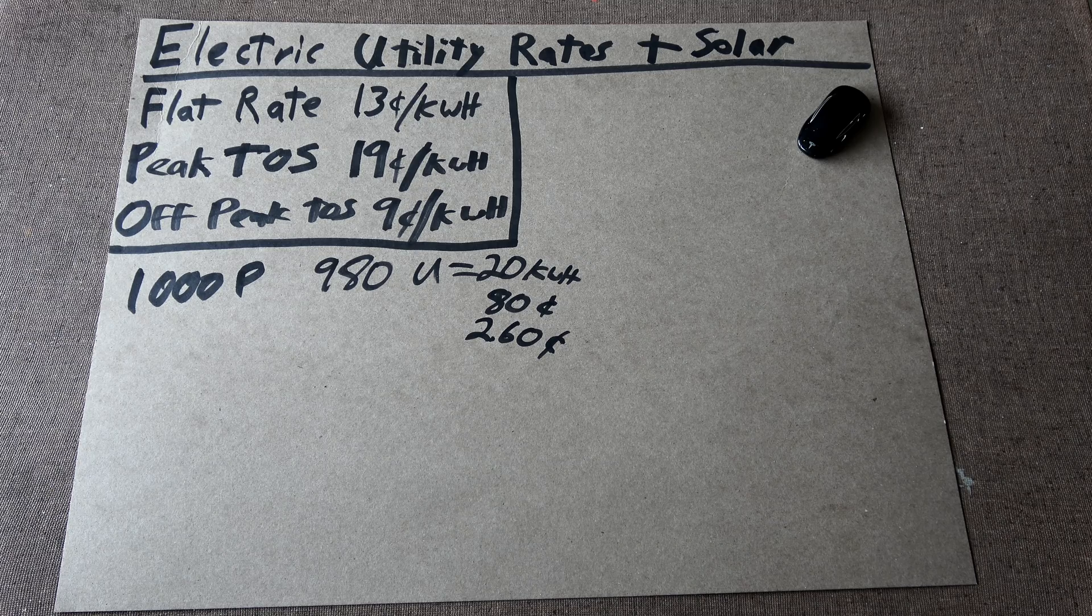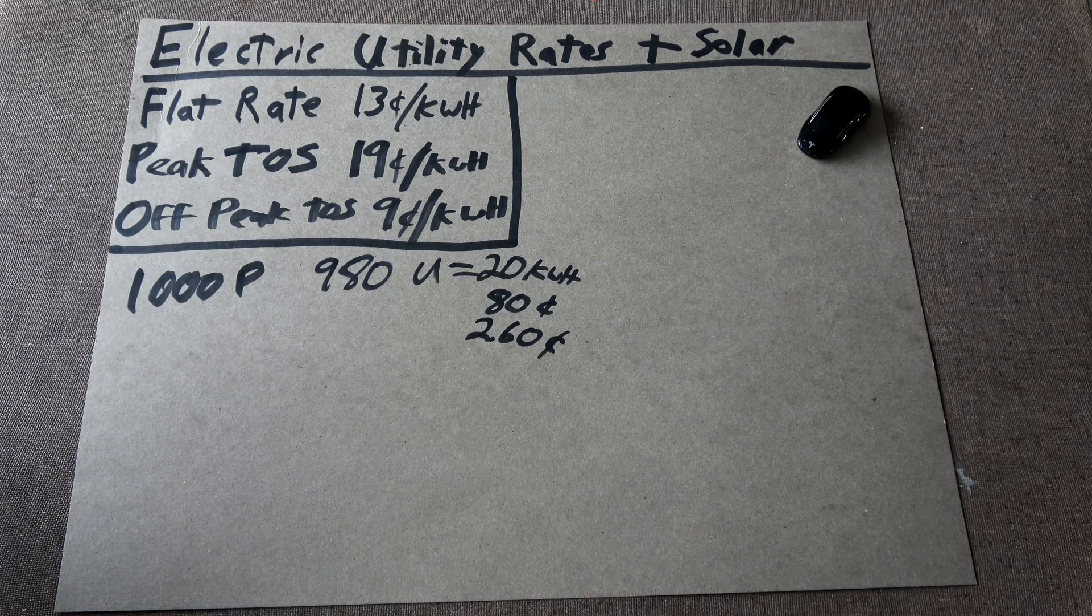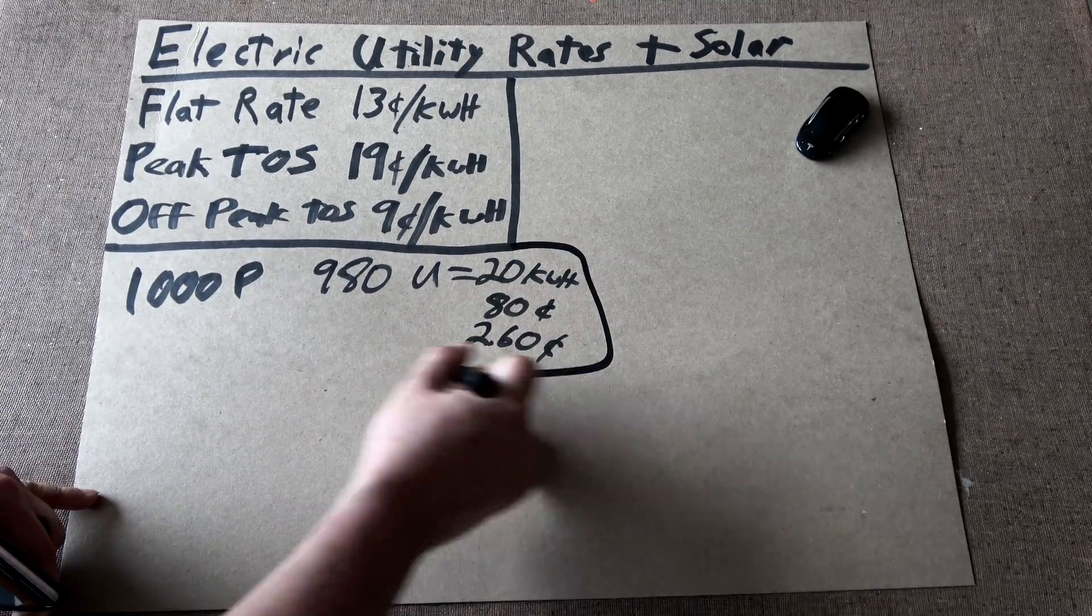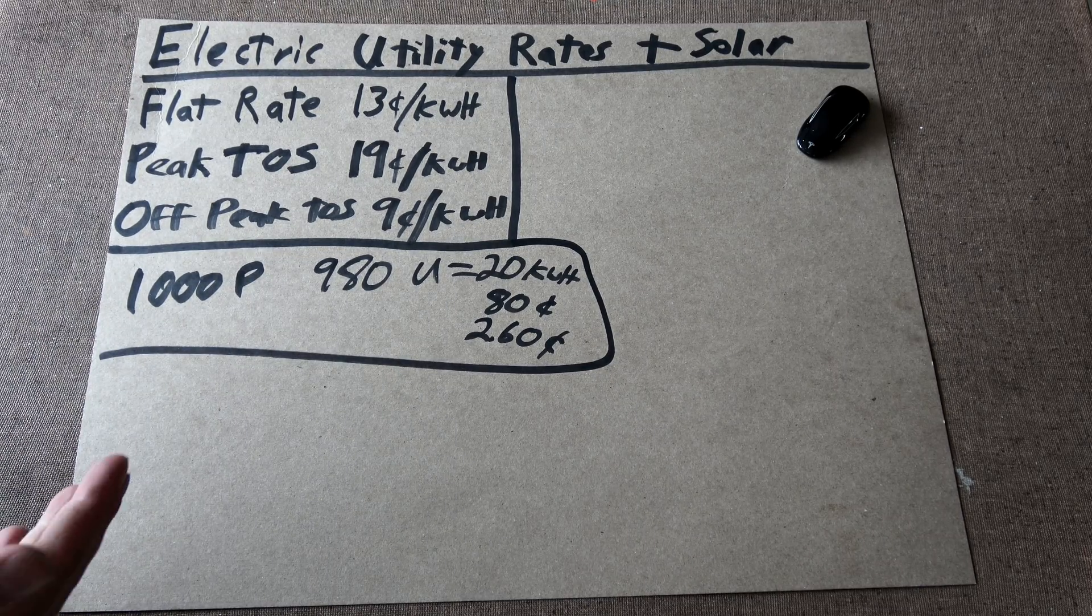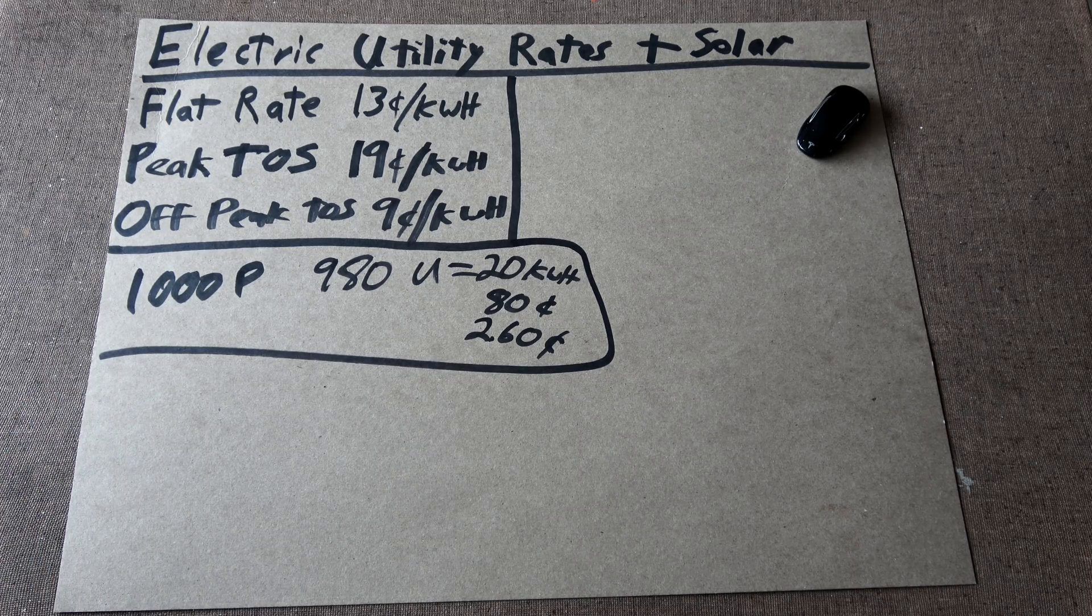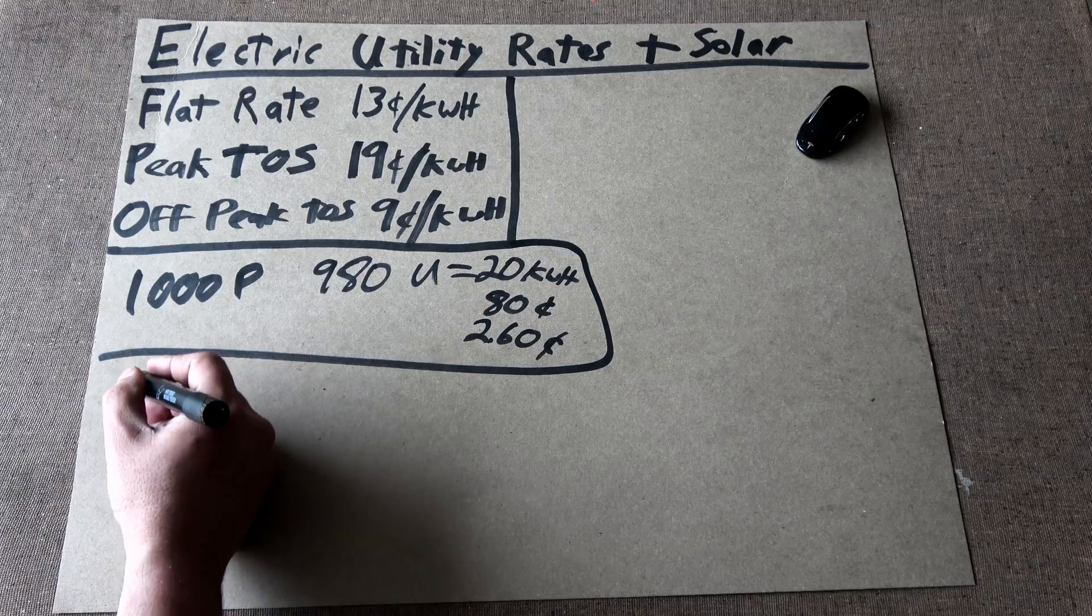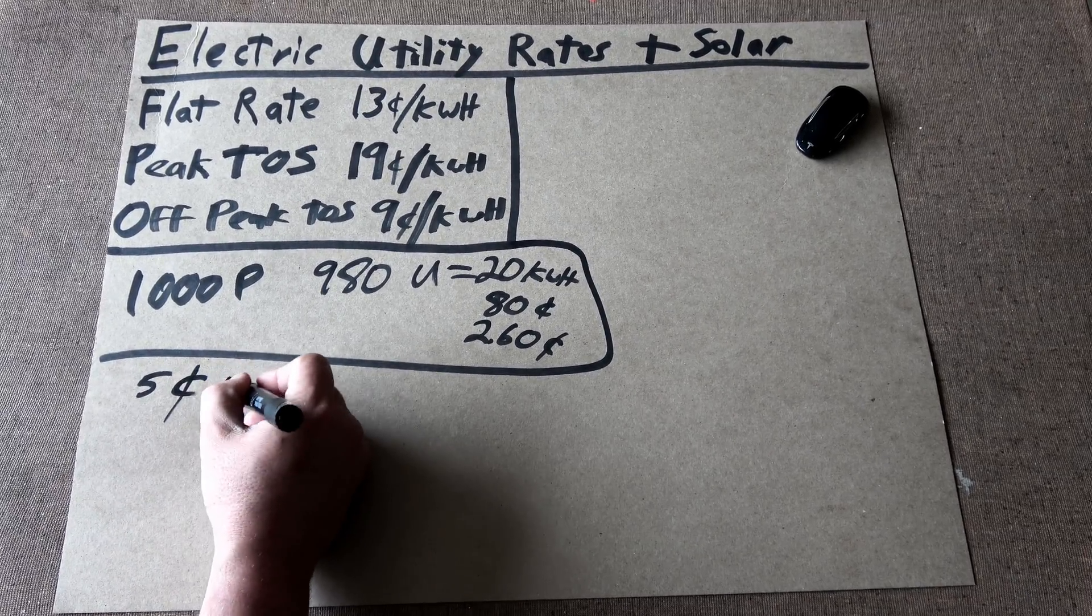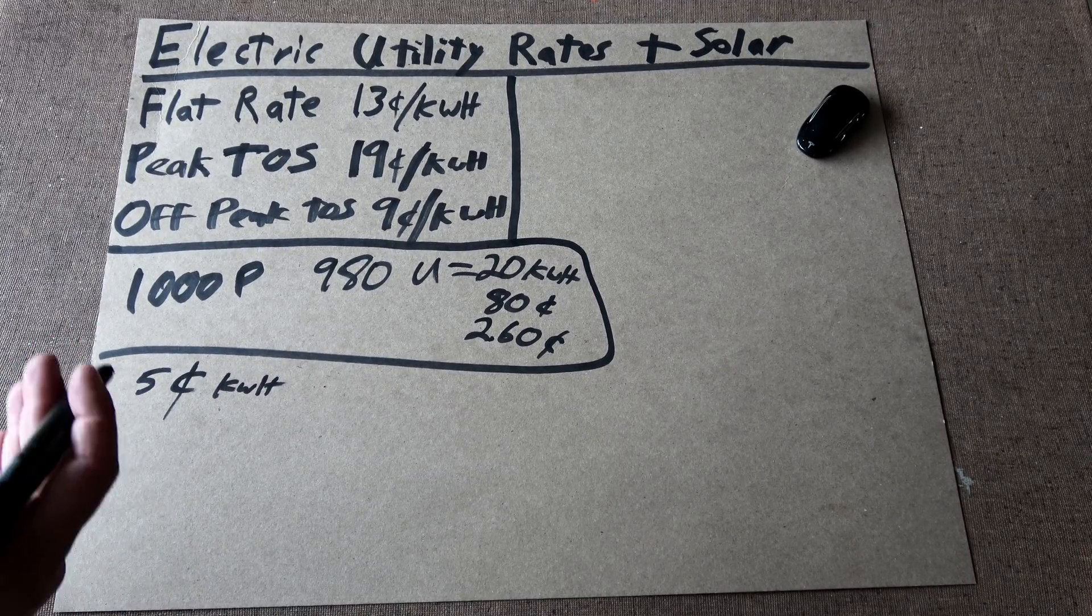If you're using nowhere near what you're producing, you're better off on time of service. You have peak and off-peak usage. Where this comes in beneficial is you are going to get paid more. When is your solar generally producing more? That's right, during the daytime. Daytime production is about 5 cents a kilowatt hour.